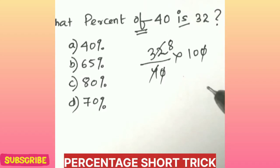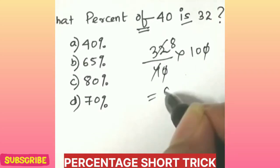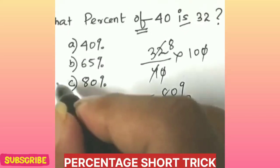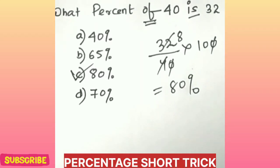If you cut this, 40 into 32, it will turn out to be 80%. So option C is the right answer. Thank you.